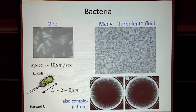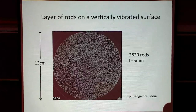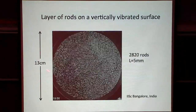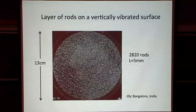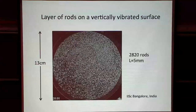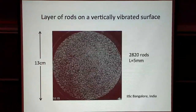Remarkably, the kind of dynamics seen in well-fed E. coli is very similar to what you see if you put a monolayer of rods — these are actually copper clippings, each about 5 millimeters in length — on a horizontal plane vibrated vertically at some frequency and fairly low amplitude. This is about 2,820 rods; the whole thing is 13 centimeters in diameter. And again, lots of swirling motion, very similar kinds of patterns.